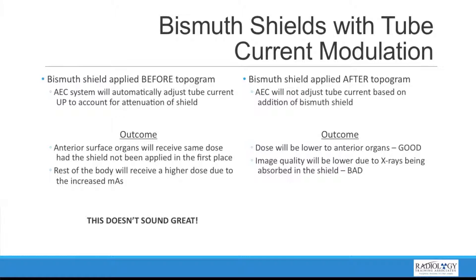What happens if we apply a bismuth shield after the topogram? The AEC will not be adjusted based on what is seen in the topogram for most scanners — some scanners can change this on the fly, but let's assume it isn't changed. The outcome is that doses will be lower to the anterior organs, which is what we're trying to achieve. However, the image quality is going to be degraded because there are fewer x-rays contributing to image formation since they're being absorbed in the shield. So we end up with a decrease in image quality, which means this option doesn't sound that great either.